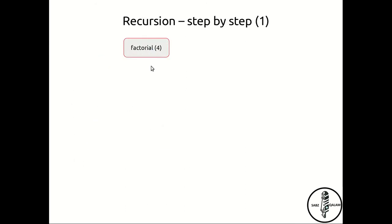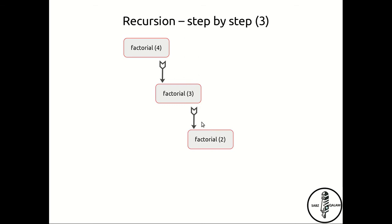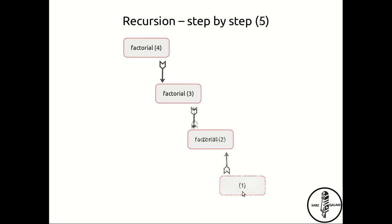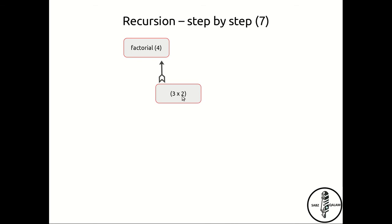It is pictorially shown here: factorial(4) calls factorial(3), which calls factorial(2), which calls factorial(1). Factorial(1) returns 1 because s equals 1, so it doesn't call anything further. That 1 is returned to factorial(2): answer is 2 times 1 equals 2. That 2 is returned to factorial(3): answer becomes 3 times 2 equals 6. That 6 is returned to factorial(4): answer is 4 times 6 equals 24, and that is our final answer.